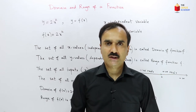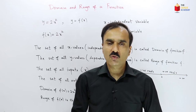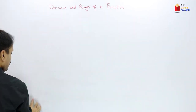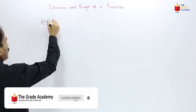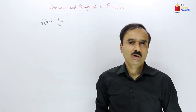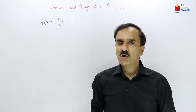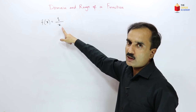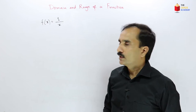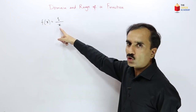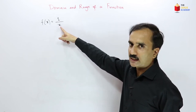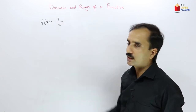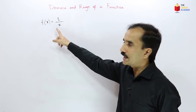We will now discuss different forms of functions and find their domain and range. For example, f(x) = 1/x. The domain is the set of all possible x values we can plug in. We cannot plug in zero because division by zero is undefined. So the domain is the set of all real numbers except zero.